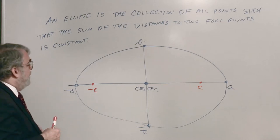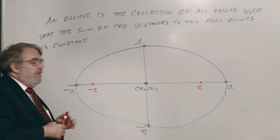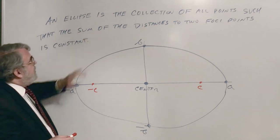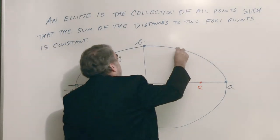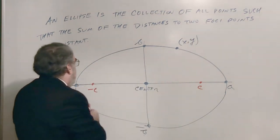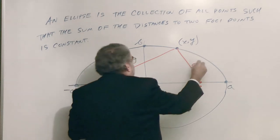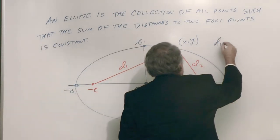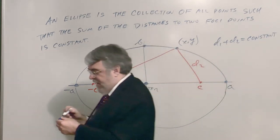C represents the length from the center to a focus — foci is plural for focus. Now, for a generic point on the ellipse, I'll call D1 the distance to one focus and D2 the distance to the other. Then what we know is that D1 plus D2 equals a constant.